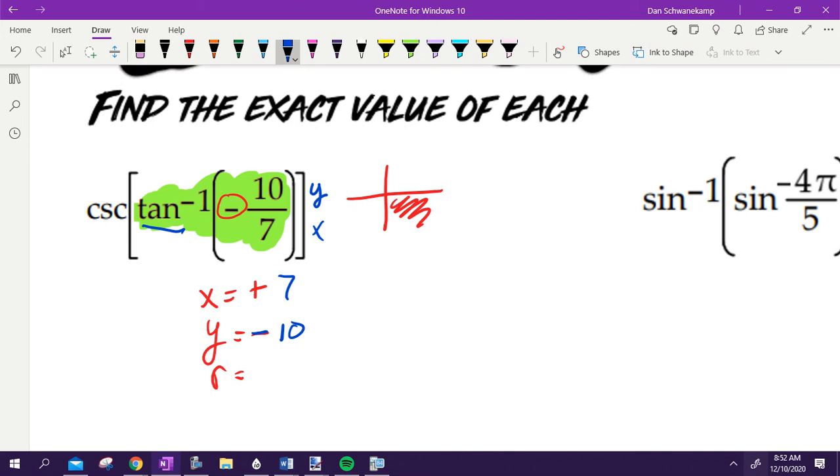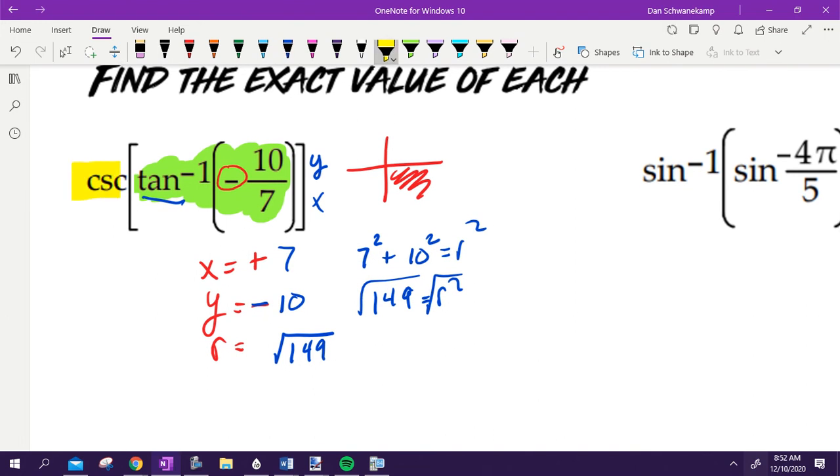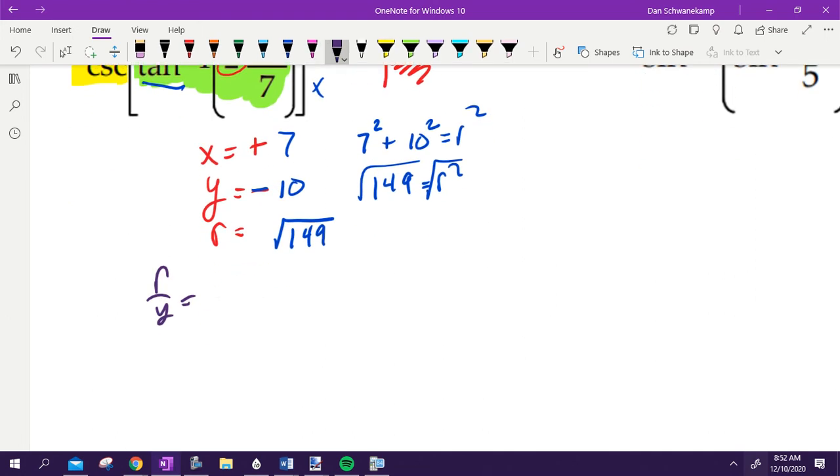How do I find my R? So X squared plus Y squared equals R squared. I get 149 equals R squared. We square root. Is it going to be plus or minus square root of 149? Plus, because the radius is always positive. Cool. We've got that set up. Then we are going to do cosecant. Once we've got X, Y, and R, this is easy. Cosecant means R over Y. So my R is square root of 149, my Y is negative 10. Boom, there is my answer.